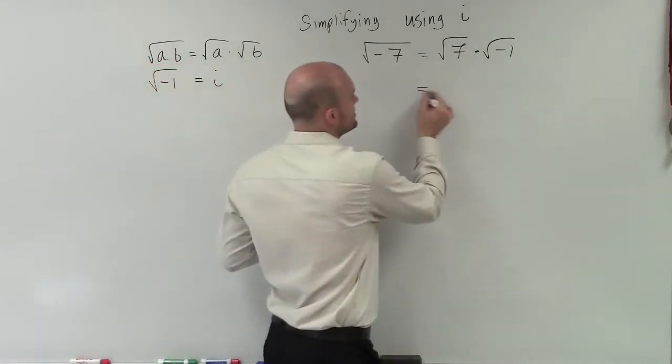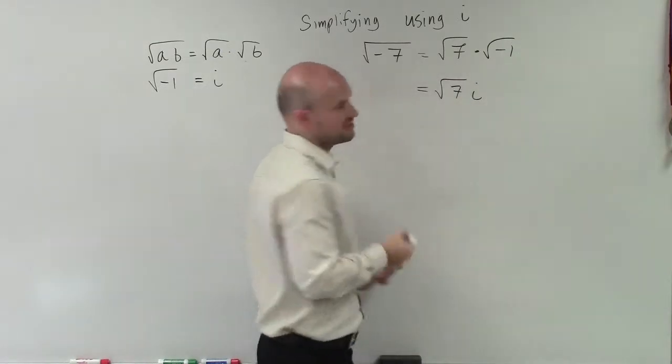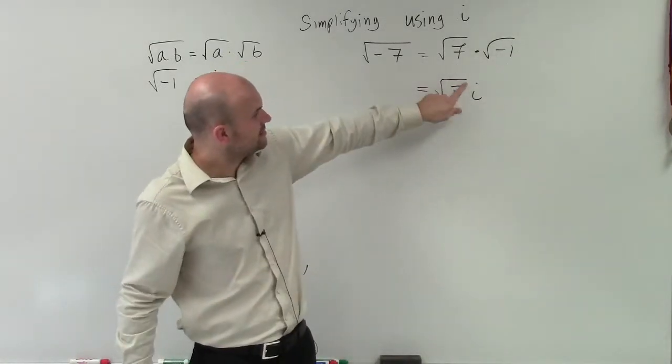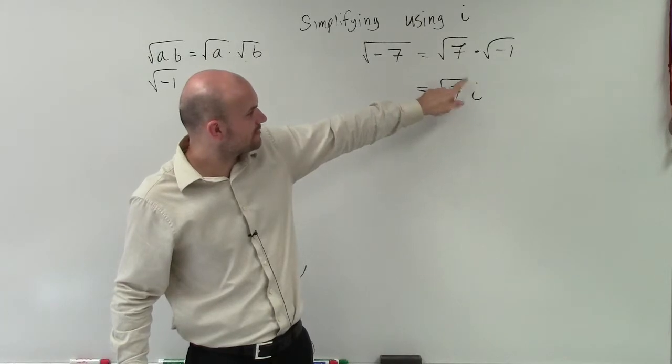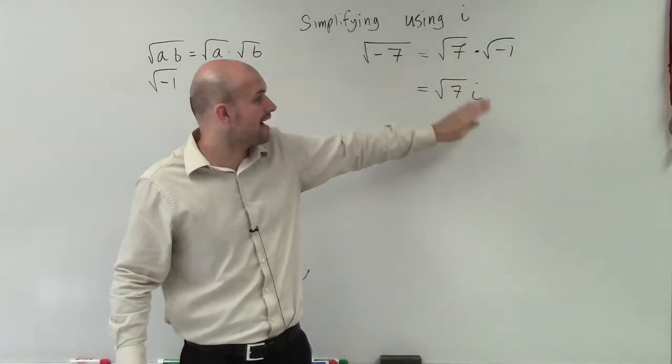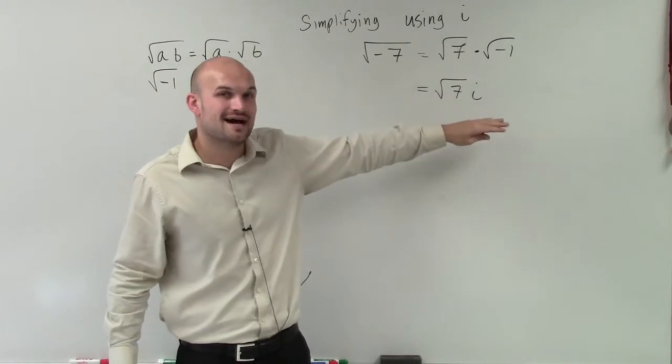So my final answer is just going to be the square root of 7 i. Just make sure when you're writing it like that, be careful with that. Make sure it doesn't go all the way over your i because we're not taking the square root of i. It's the square root of 7 times i.